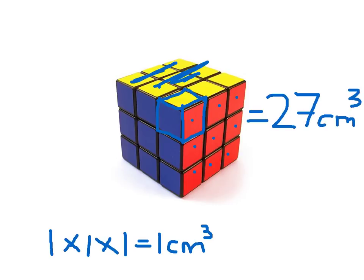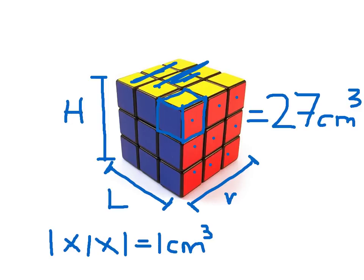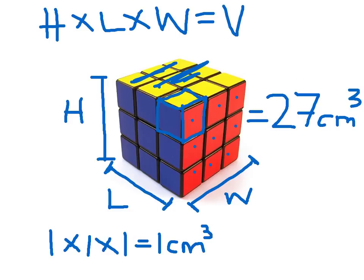Another way that we can work that out, sometimes called the formula, is we figure out what is the height, what is the length, and what is the width. So this is the height, this is the length, and this is the width. We say height times length times width equals V for volume.